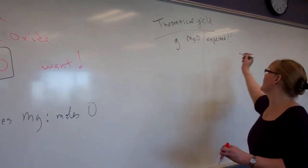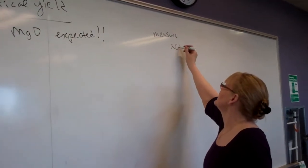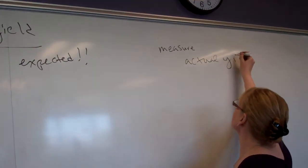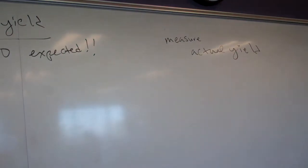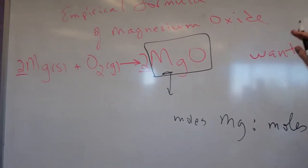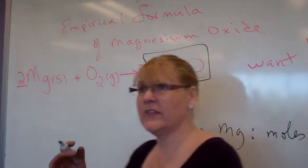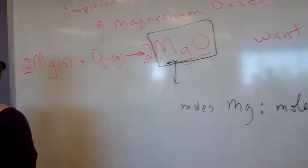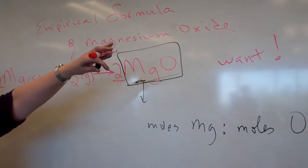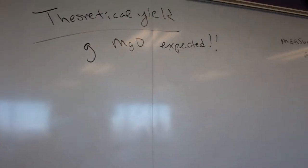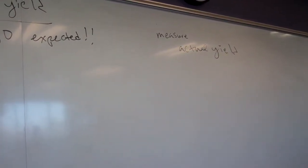At the end of this we are also going to measure the actual yield — what we actually get. We're going to weigh out the magnesium oxide we get at the end of the experiment; that is the actual yield. We're going to predict the theoretical yield, and we're going to measure the actual yield ourselves.